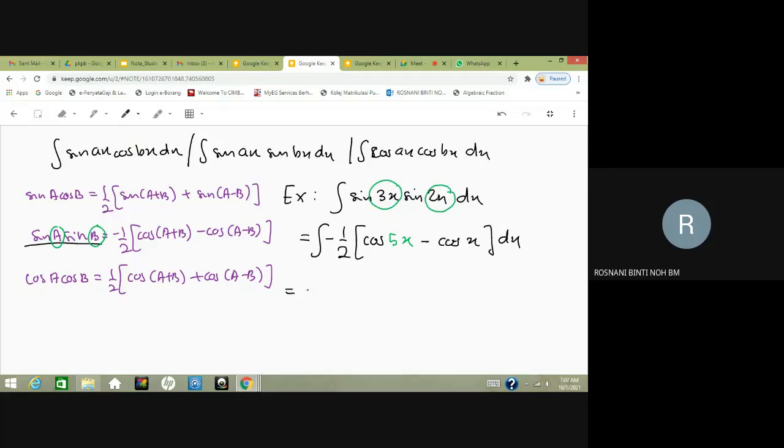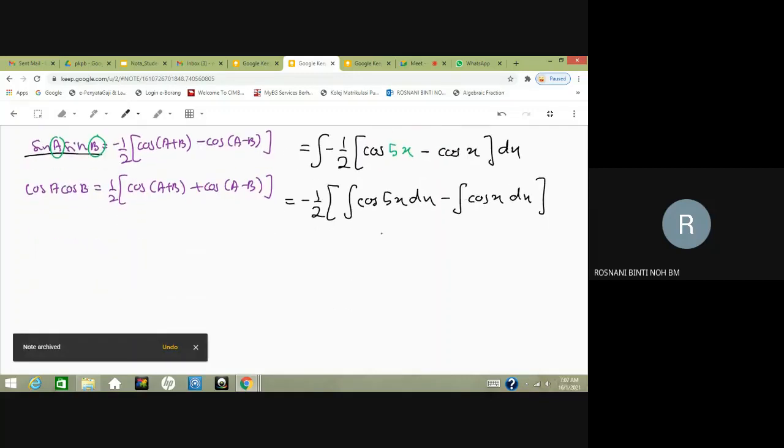We rewrite that. I'll split the integral: negative one-half times the integral of cos 5x dx minus the integral of cos x dx. We haven't integrated yet.